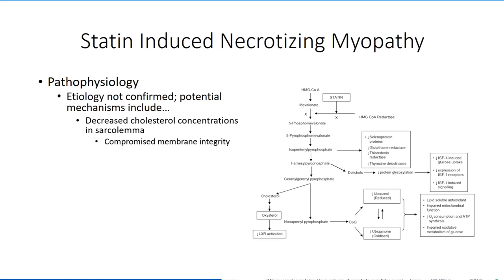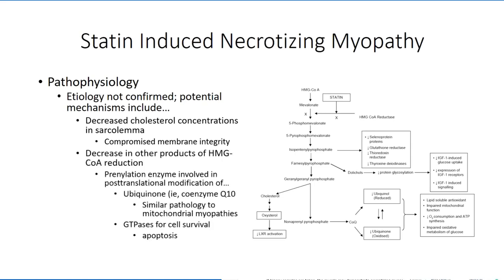It would make sense that the muscle membrane is particularly susceptible to this decrease, when considering the forces that project across the sarcolemma. Another theory is that inhibition of HMG-CoA reductase will have an effect on other metabolic pathways. For example, prenylation enzyme is involved in the post-translational modification of ubiquinone involved in the electron transport chain. Statin myopathies bear some resemblance to mitochondrial myopathies discussed earlier, giving some support to this theory. Prenylation enzyme is also involved in post-translational modification of GTPases, which could lead to cellular apoptosis.